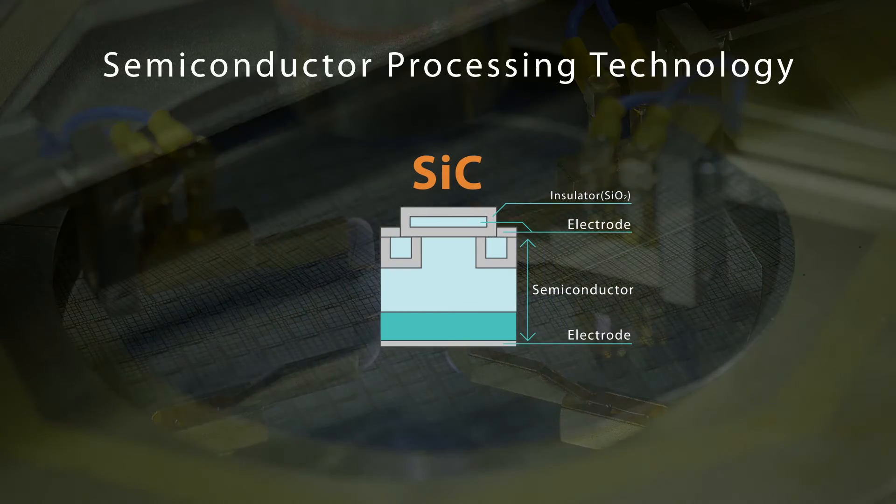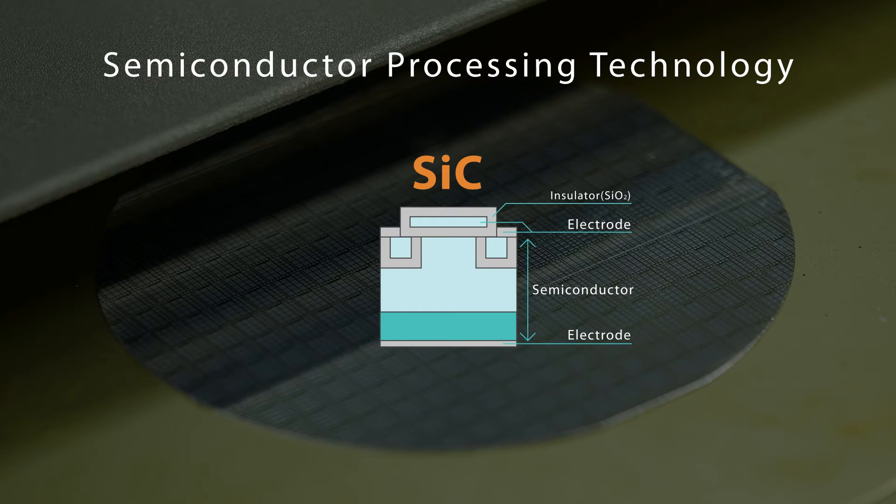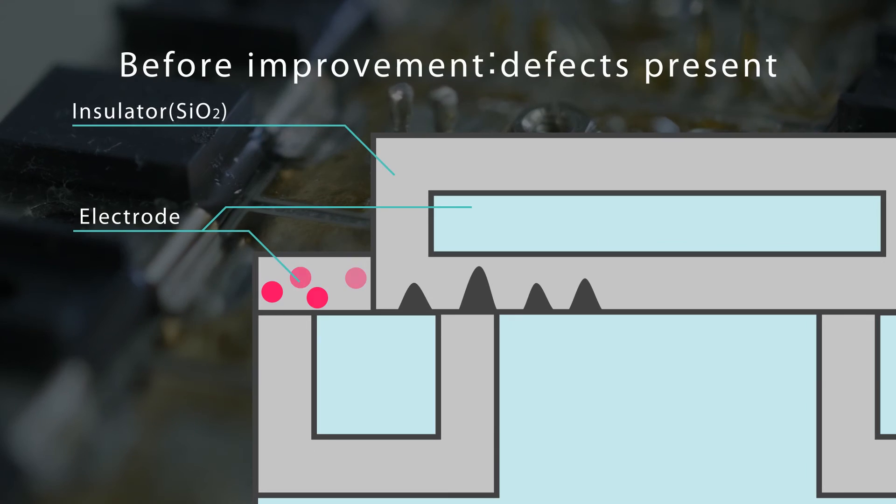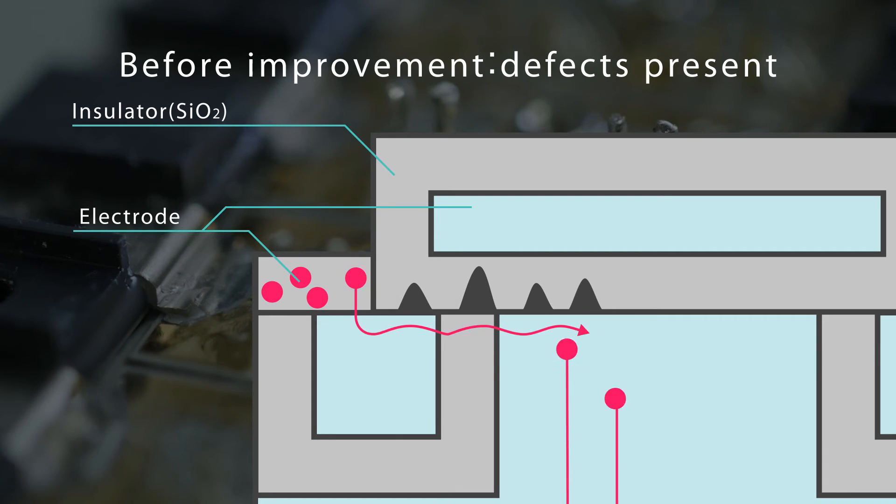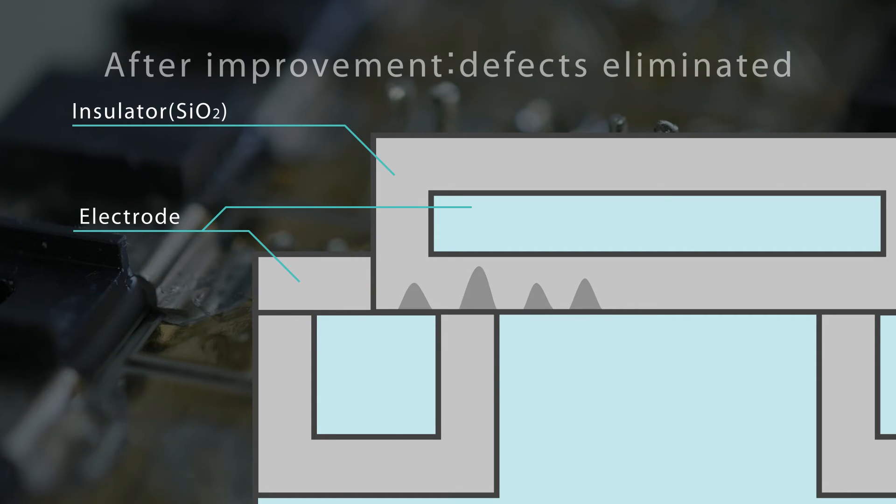An important factor in this technology is semiconductor processing. The flow of electrons is improved by eliminating defects in the interface between the semiconductor and insulating film.